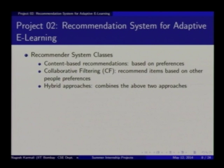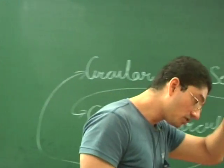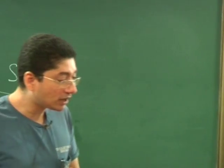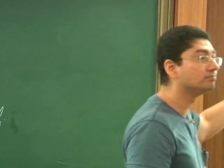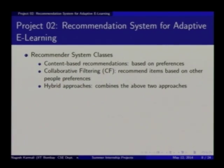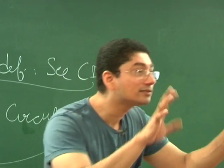Recommendation system: you have content-based recommendation systems based on preferences — Google recommends something based on my preference. The second one is collaborative filtering — somebody bought a book on Flipkart, and based on his sequence of purchases, Flipkart is also asking me to buy something based on other people's preferences. And there are hybrid approaches. These are not very difficult — you just have to know them.